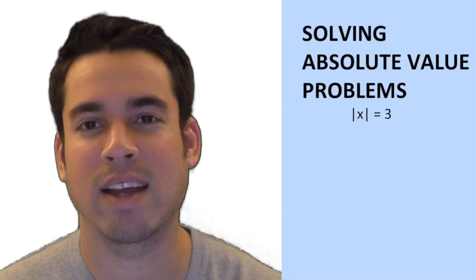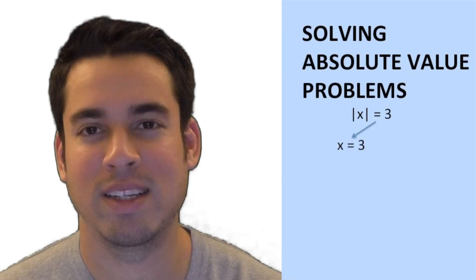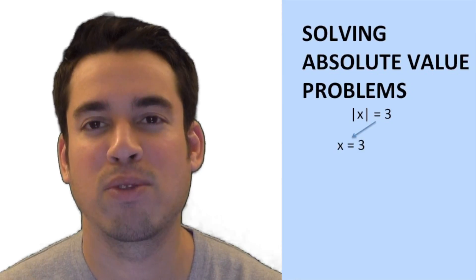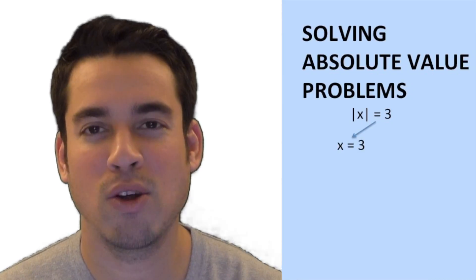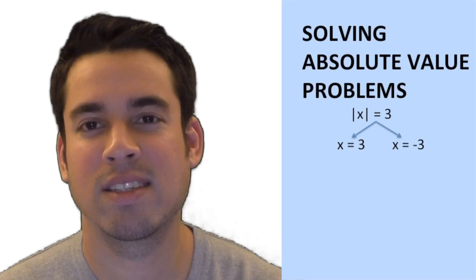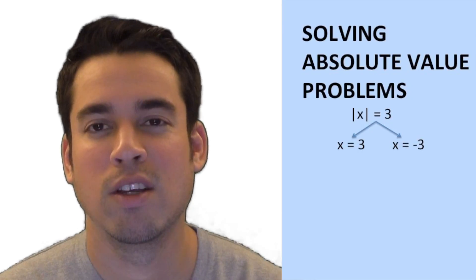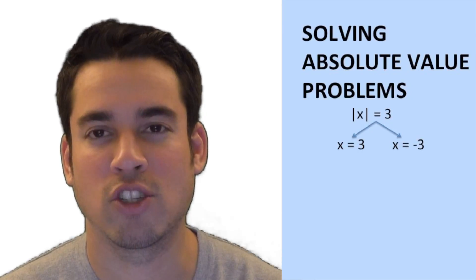So let's say I said the absolute value of x equals three. Right off the bat, we know that x can equal three itself, because the absolute value of three is three. But we also know that x can equal negative three, because if x is negative three, you take the absolute value of that and you get three. So in this way, there's always going to be two solutions.